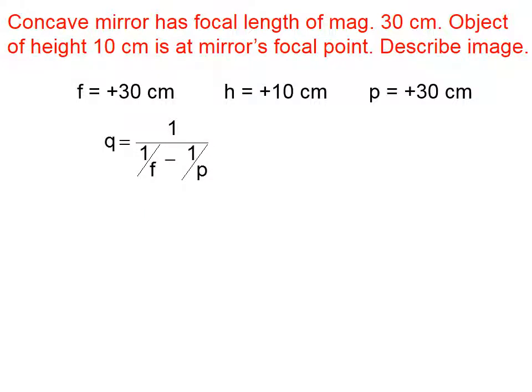Just like we did before, if we solve the mirror equation for the image distance q, you can see what happens in the denominator, that term goes to zero, which means the image is at infinity. Or as I would say it, there's no image.